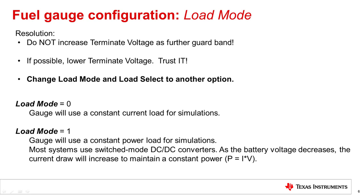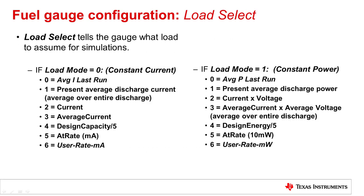A couple of configurations that we can change for such dynamic conditions are the load mode and load select parameters. The gauge makes use of these options while running simulations. We can set load mode equal to 0 for constant current simulations, and load mode equal to 1 for constant power simulations. After selecting the correct load mode, it is important to pick the correct value of load select as well. Load select tells the gauge what load current or load power to assume for simulations, depending on the load mode value of 0 or 1.